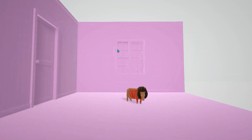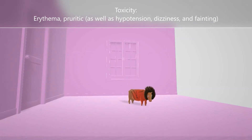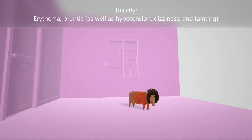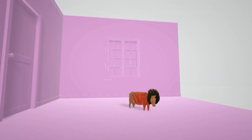In terms of toxicity, we see the mini ox with redness — erythema is a side effect of minoxidil, along with pruritus, shown by the scratch marks on the mini ox. Other side effects may include hypotension, since it treats vasodilation and hypertension, as well as dizziness and fainting.